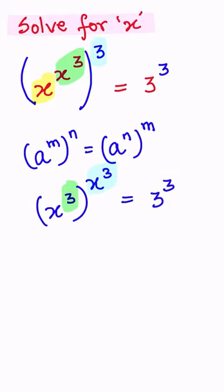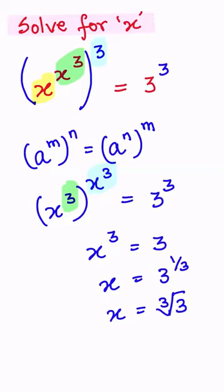Comparing both sides you will get x raised to power 3 is equal to 3. Take the power 3 on other side. So x is equal to 3 raised to power 1 by 3, or x is nothing but cube root of 3, and that's our answer.